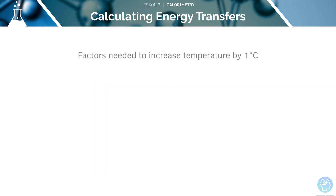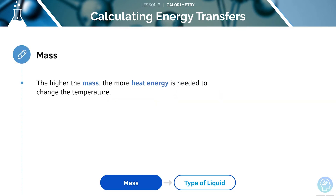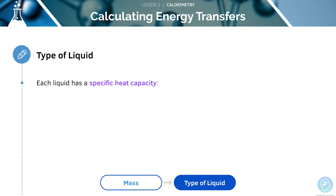The amount of heat energy needed to increase the temperature by one degree Celsius varies dependent on factors such as the mass and the type of liquid. The larger the mass of the liquid, the more heat energy is needed to change the temperature. It takes more heat energy to increase the temperature of a huge bath of water compared to a smaller beaker.